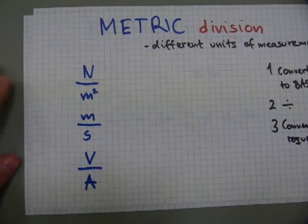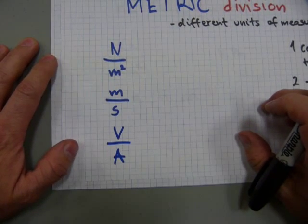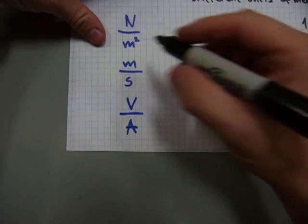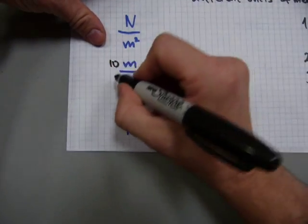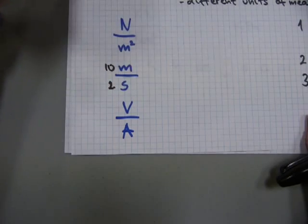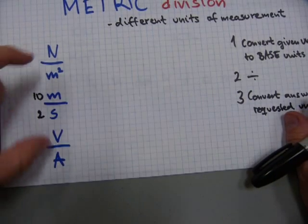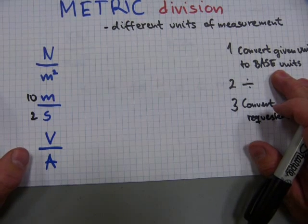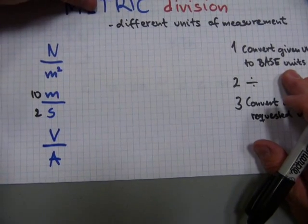For example, let's start with this one in the middle: meters divided by seconds. You might be traveling a distance of 10 meters in 2 seconds. Meters and seconds are base units. I know this because meters and seconds don't have any metric prefixes like kilo or centi or deca.